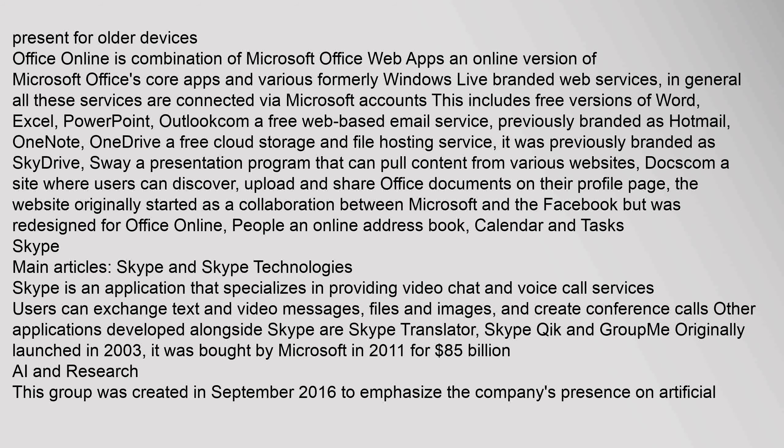Office Online is a combination of Microsoft Office Web Apps — an online version of Microsoft Office's core apps and various formerly Windows Live-branded web services. All these services are connected via Microsoft accounts. This includes free versions of Word, Excel, PowerPoint, Outlook (a free web-based email service previously branded as Hotmail), OneNote, OneDrive (a free cloud storage service previously branded as SkyDrive), Sway (a presentation program), and Docs.com (a site where users can discover, upload, and share Office documents).